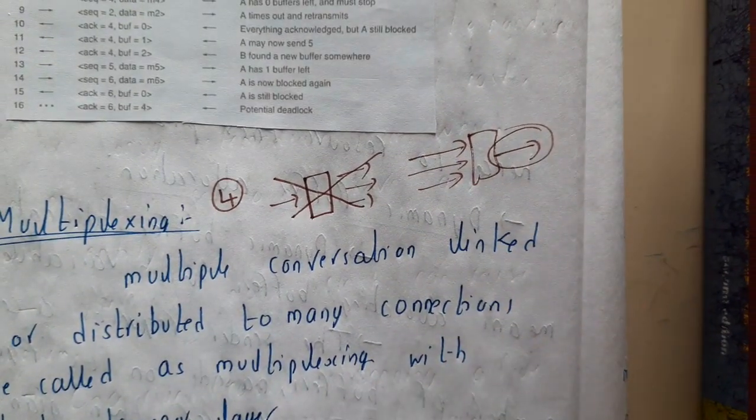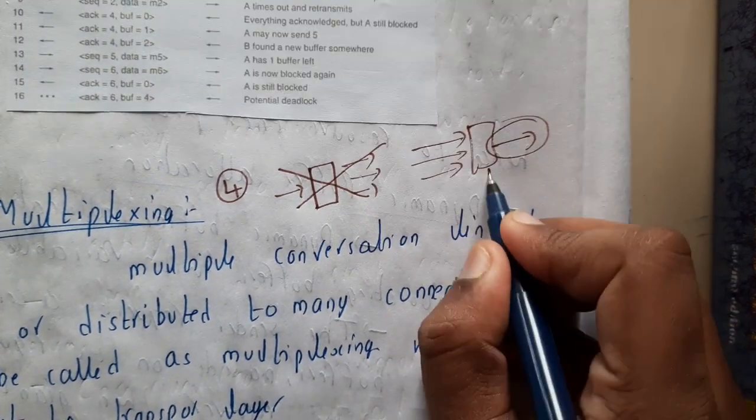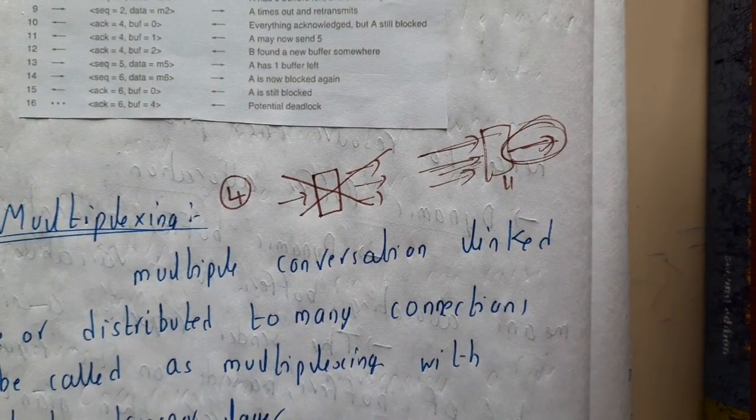That is the work that is done by multiplexer. Based on some selection lines, it will be selecting from multiple inputs to a single one. So remember that, that's the main logic behind the multiplexers.